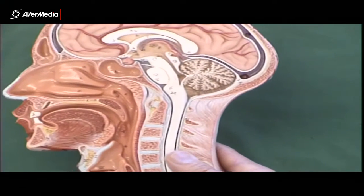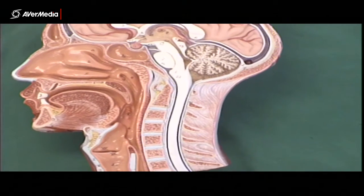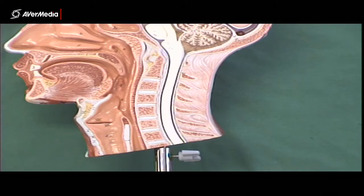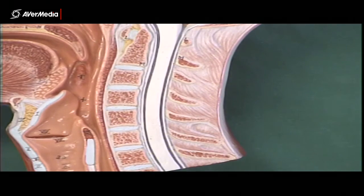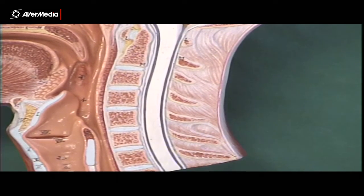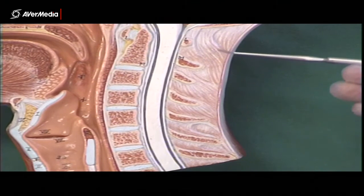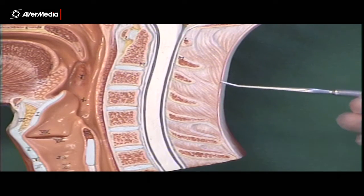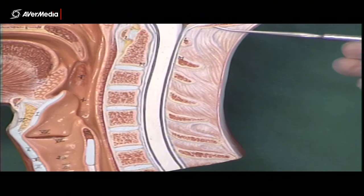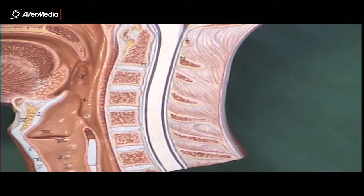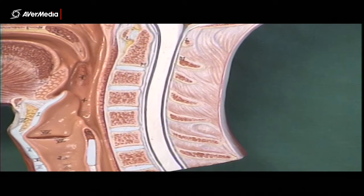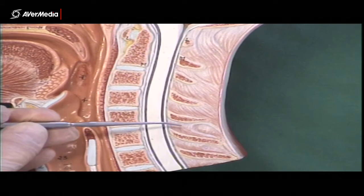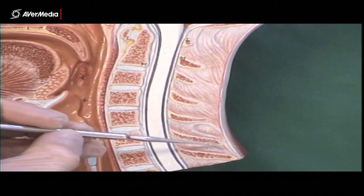Lastly, back to our sagittal section of the head and neck. We can see that there's a whole lot of ligamentous material here, posterior to the vertebrae, attaching into the occipital bone and also to the skin. This structure here is the nuchal ligament, only found up here in the neck.